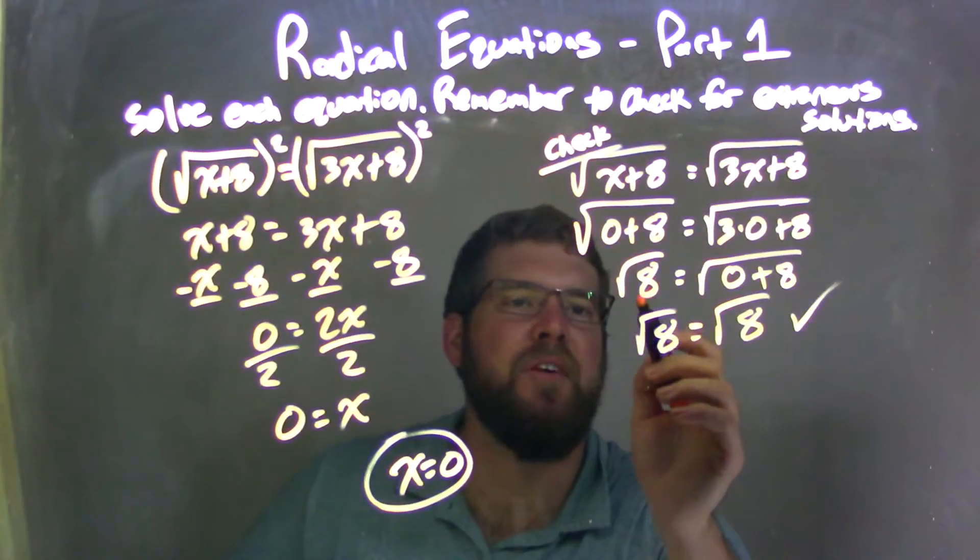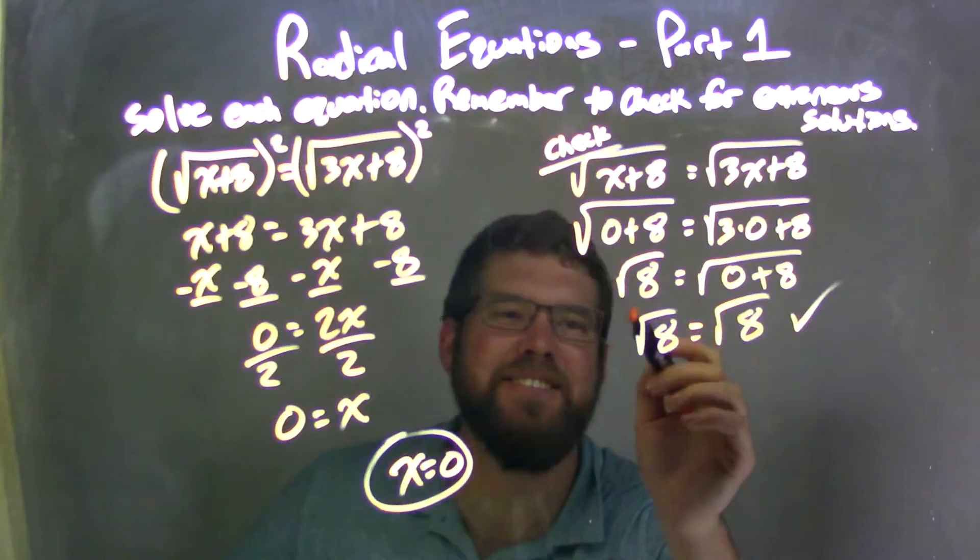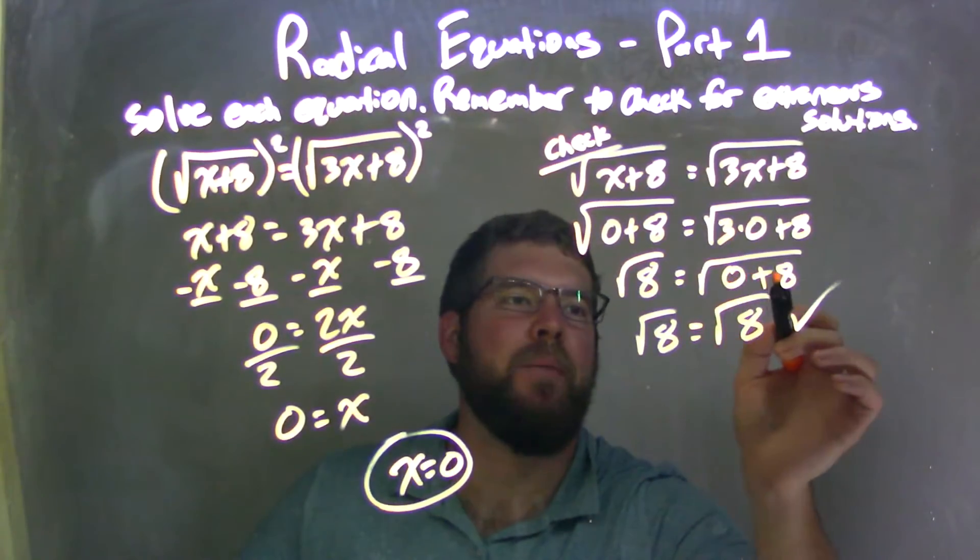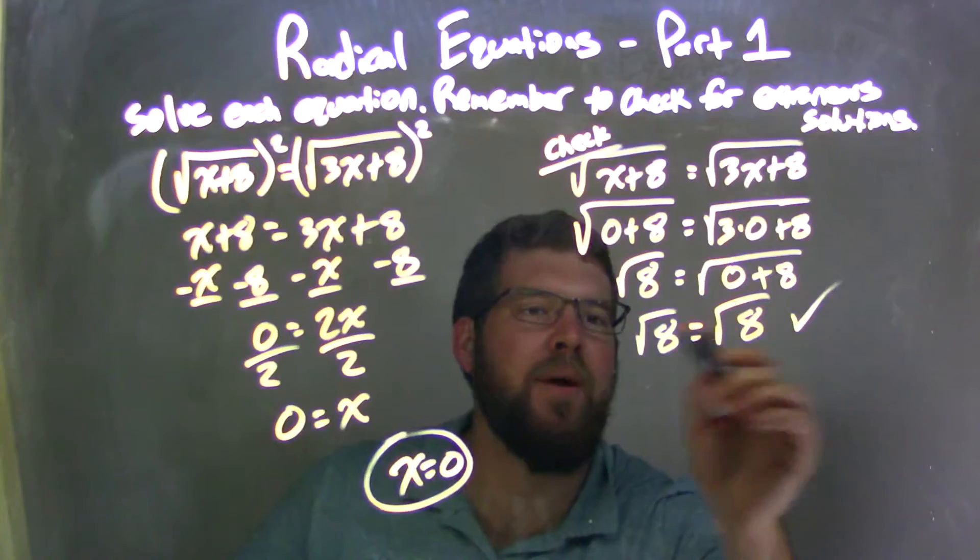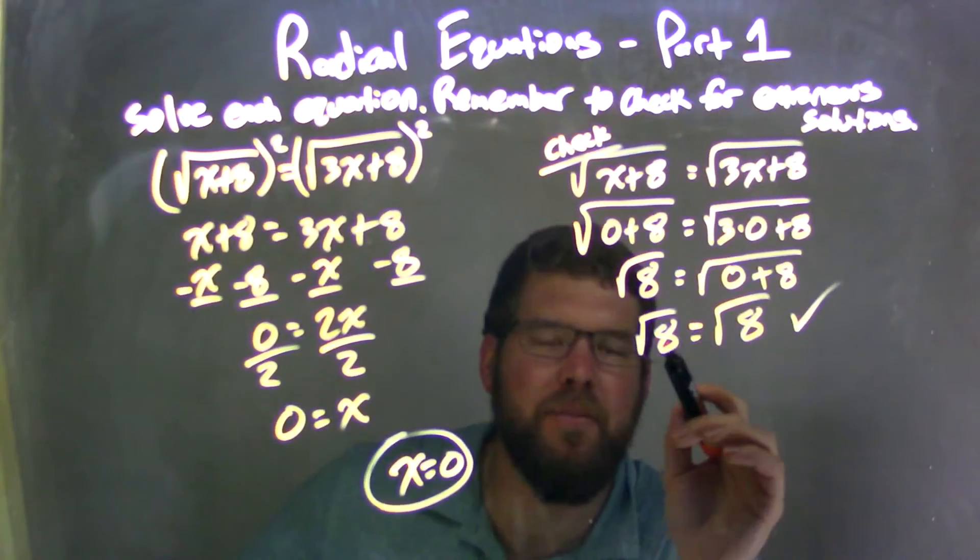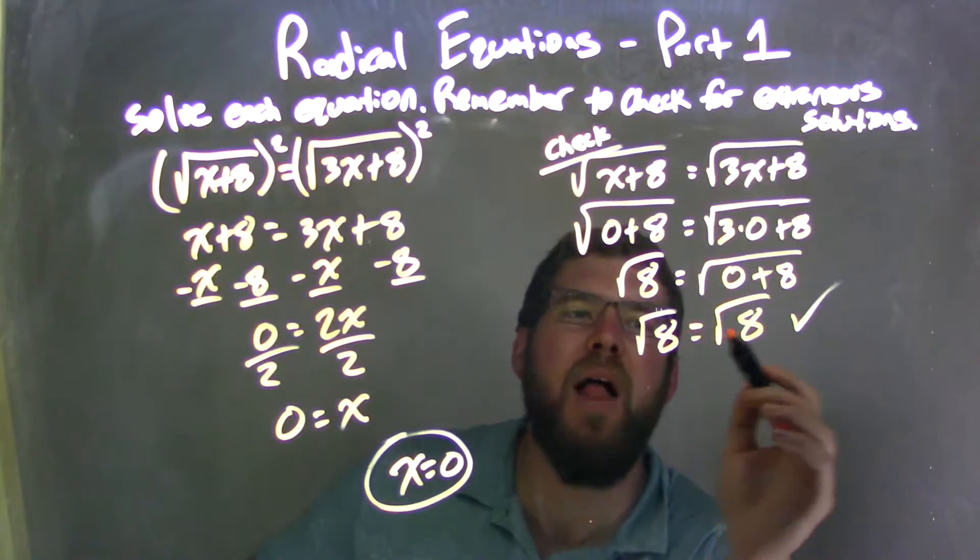But 0 plus 8 is just 8, so we have square root of 8 there. And 3 times 0 is 0, then we added 8, and we're left with square root of 8 here on the right, and square root of 8 on the left. Be careful with your order of operations. That's true.